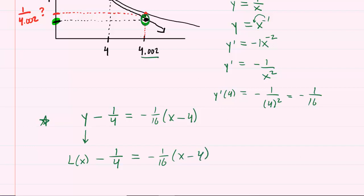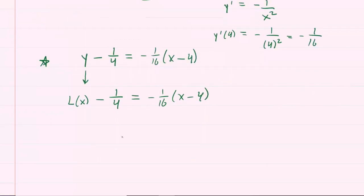So again, we're going to cap this off by plugging in 4.002 in for x. We'll plug it in for that x, as well as the x on this side of the equation.